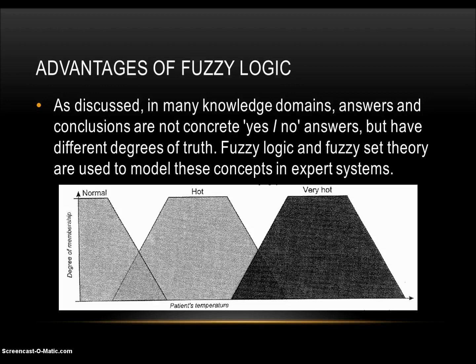As we can see in this picture showing the varying degrees of temperature, you've got normal, then hot, then very hot, with an overlap in between the three — illustrating how fuzzy logic and fuzzy set theory help model these concepts of differing degrees of truth.